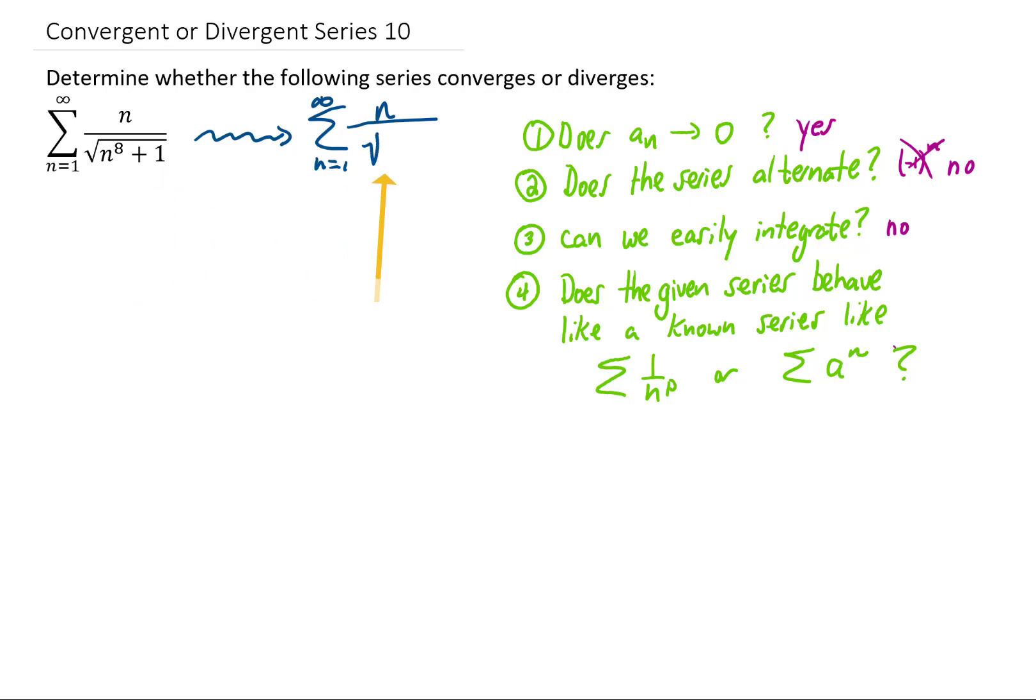So as n gets big, we expect this denominator to behave like the square root of n to the 8th power. Taking a square root of that n to the 8th gives us an n to the 4th, simplifying gives us a 1 over n cubed.